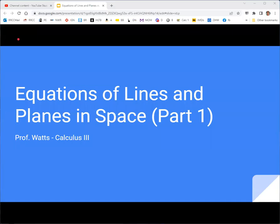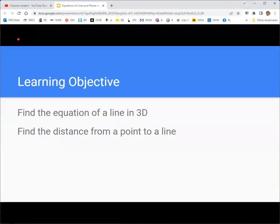All right, in this video we are going to take a look at equations of lines and planes in space. This lecture goes along with section 2.5 of the OpenStax textbook, Calculus Volume 3. It's a rather lengthy section, so we're going to break it into two parts. In this first part, we're going to look at finding the equation of a line in three dimensions and finding the distance from a point to a line.